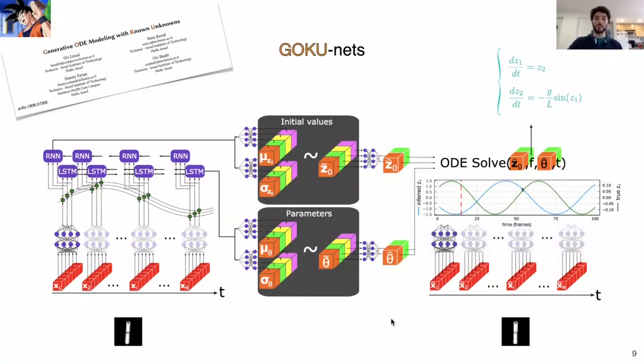You can notice that even though the reconstructed and predicted frames are quite good, the inferred phase space doesn't match. In this case, the predicted ground truth angles have a phase shift and different scales.